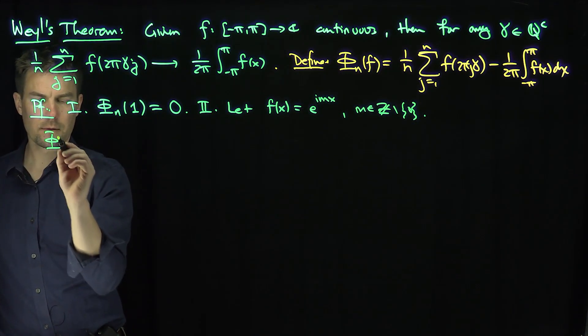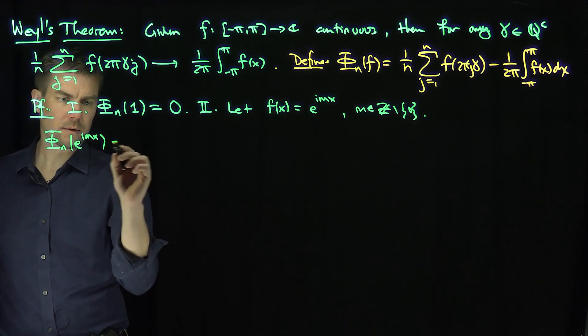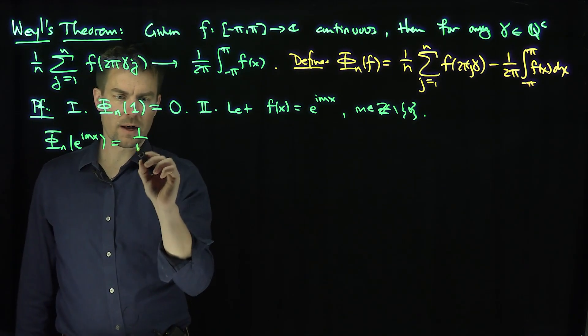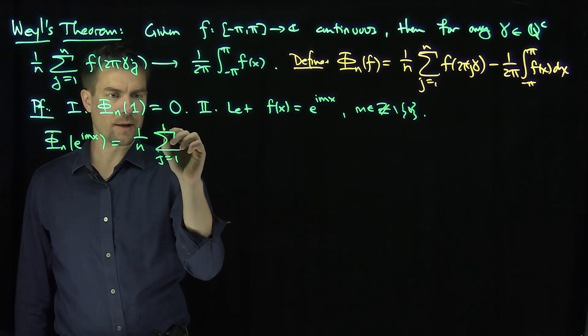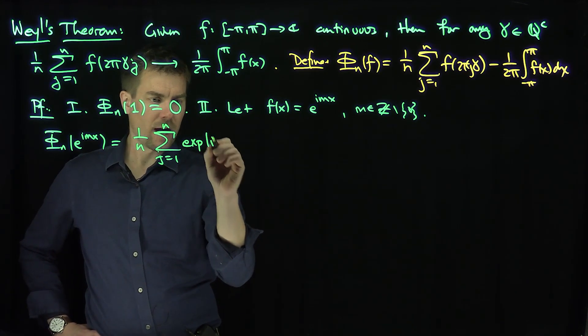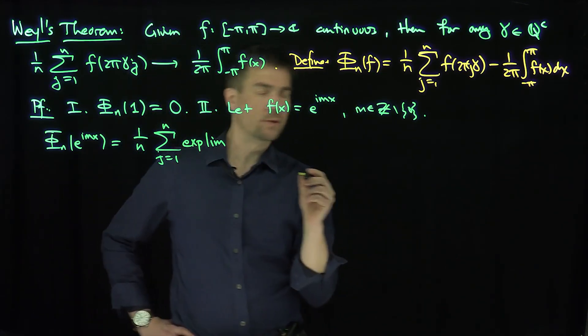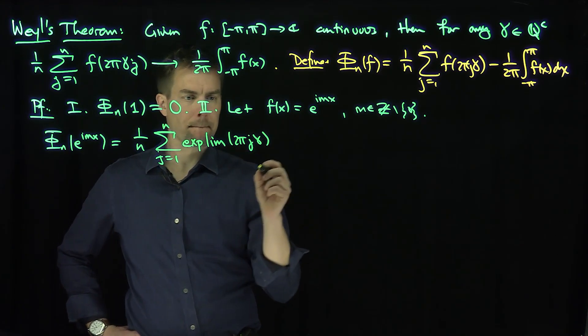So now, φ_n of e to the imx is going to be 1 over n, the sum j goes from 1 up to n. Now I have to plug in, so I have an exponential of im and then 2πjγ.